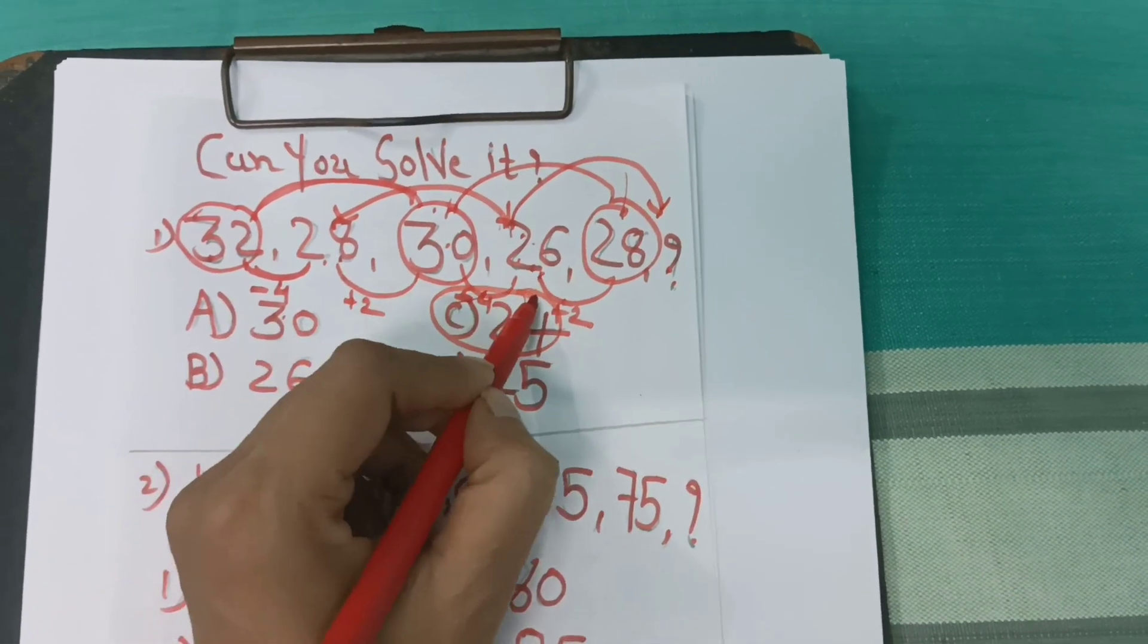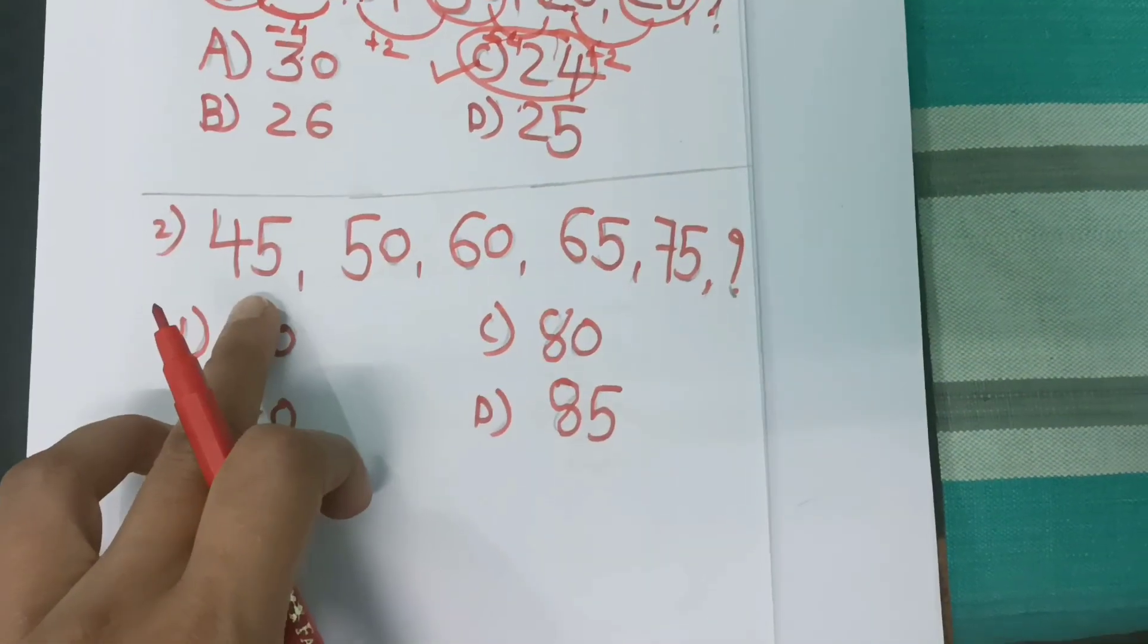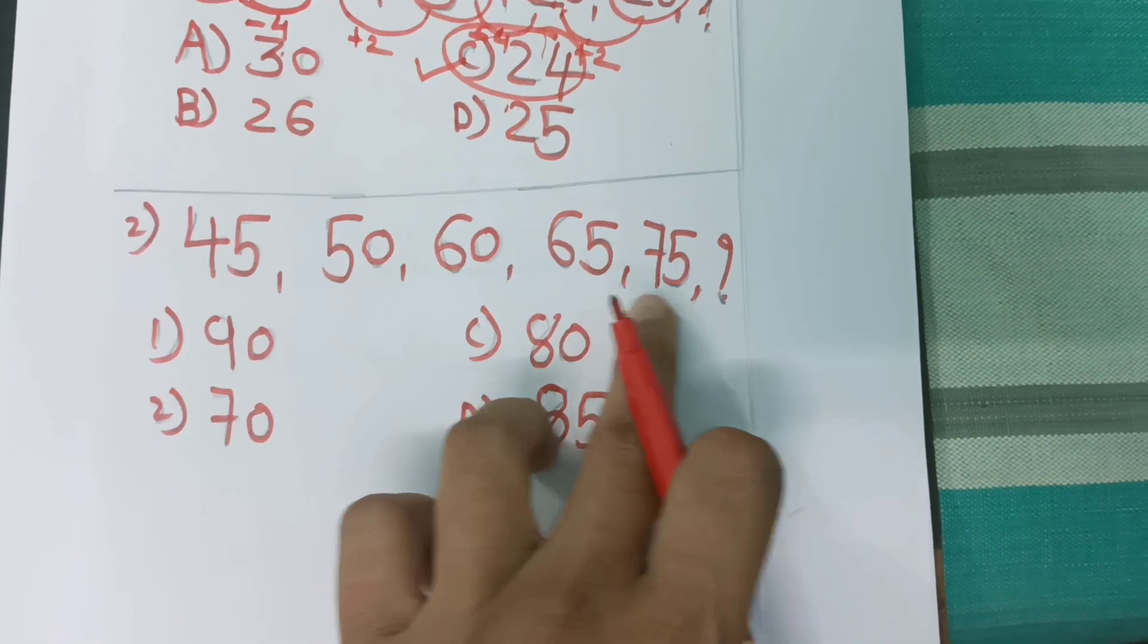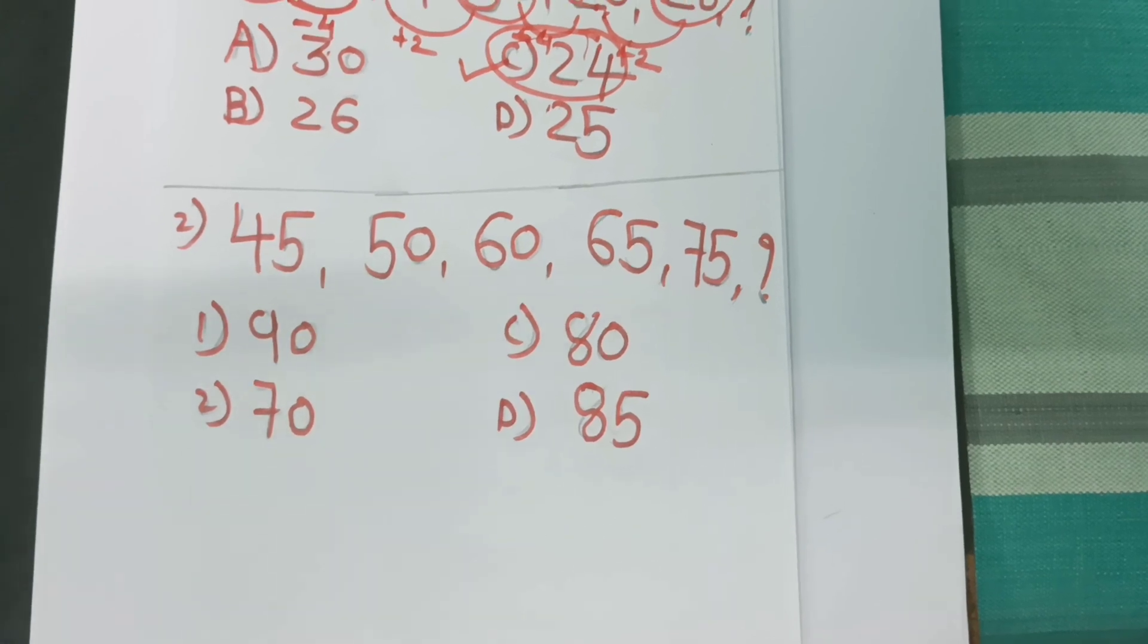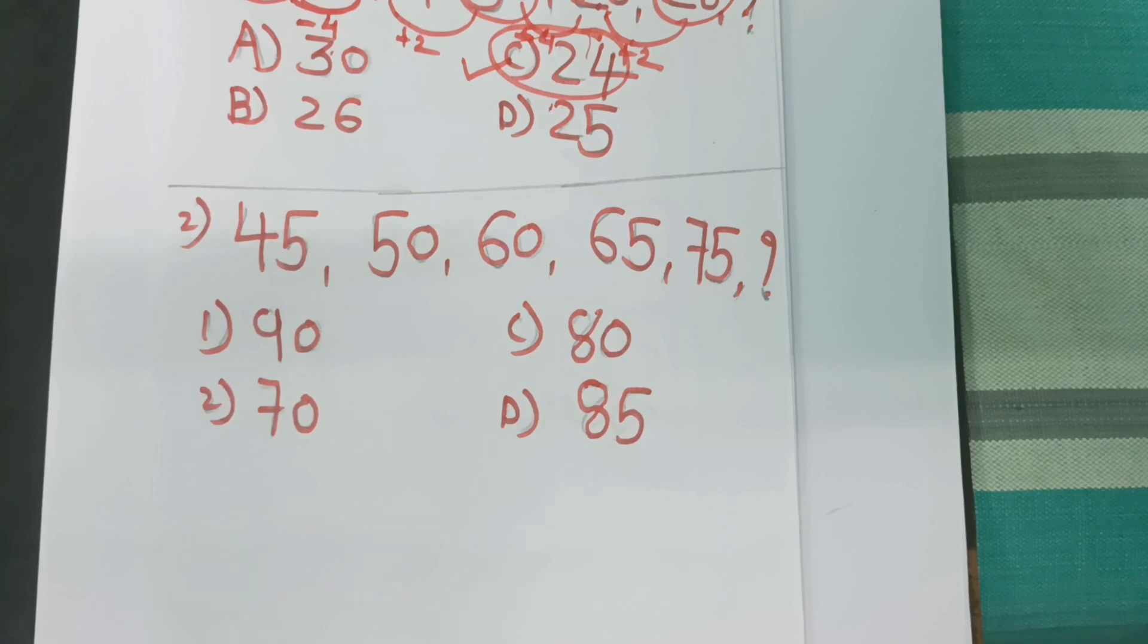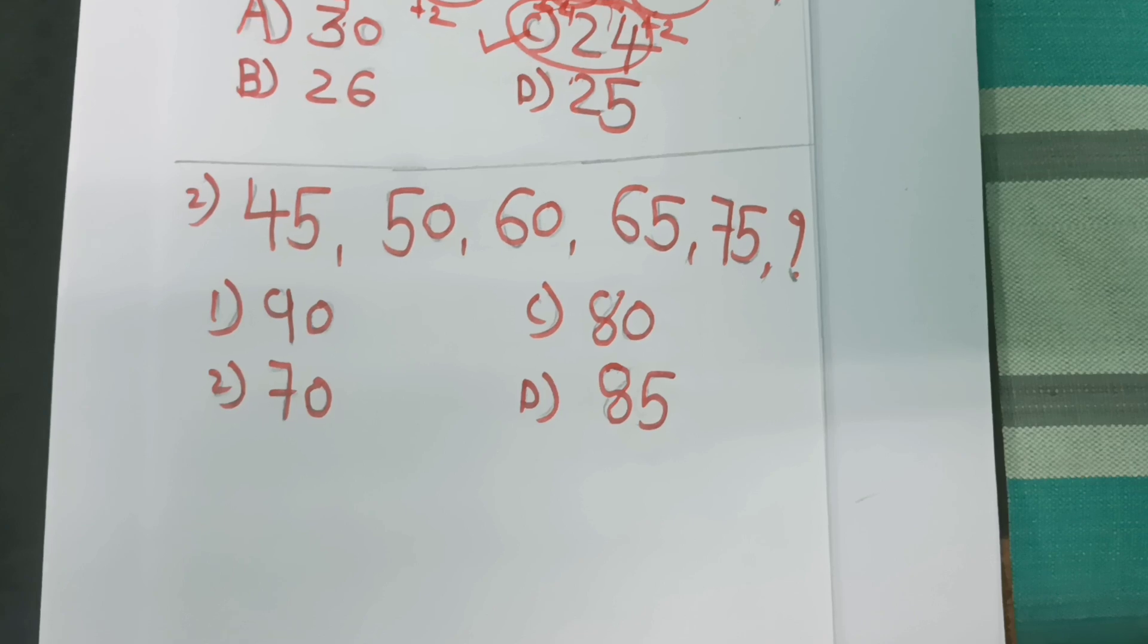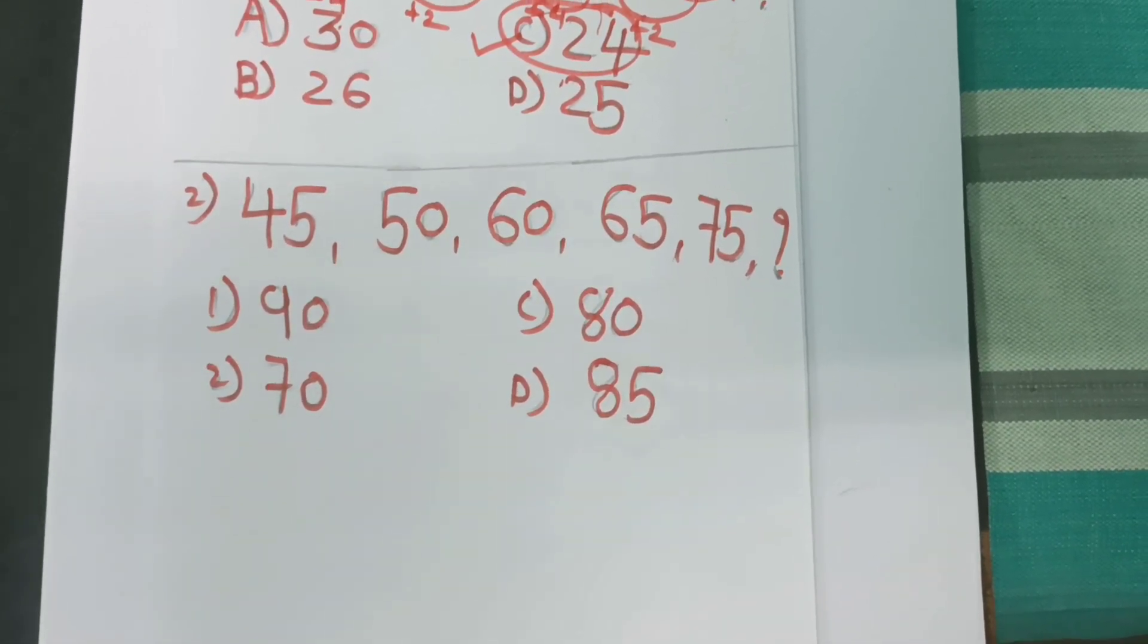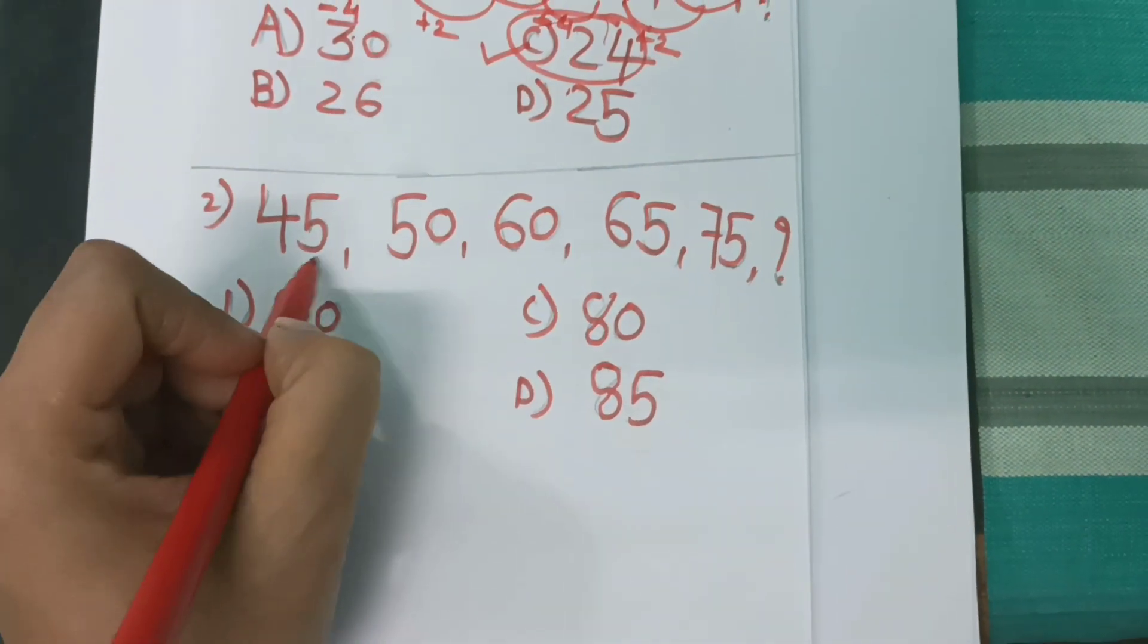The next question is 45, 50, 60, 65, 75, then what? I will start counting: 1, 2, 3, 4, 5, 6, 7, 8, 9, 10, 11, 12, 13, 14, 15, 16, 17, 18, 19, 20.